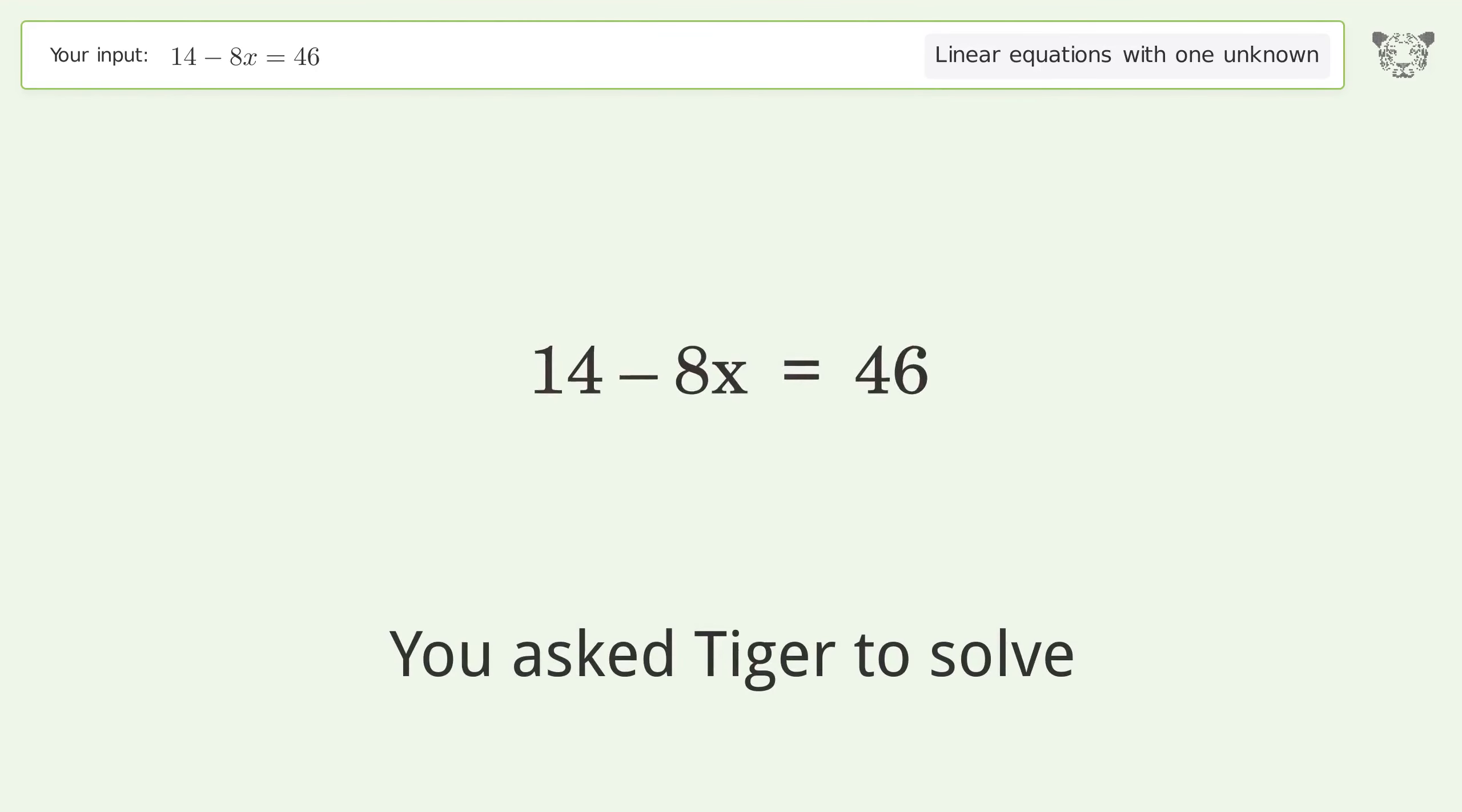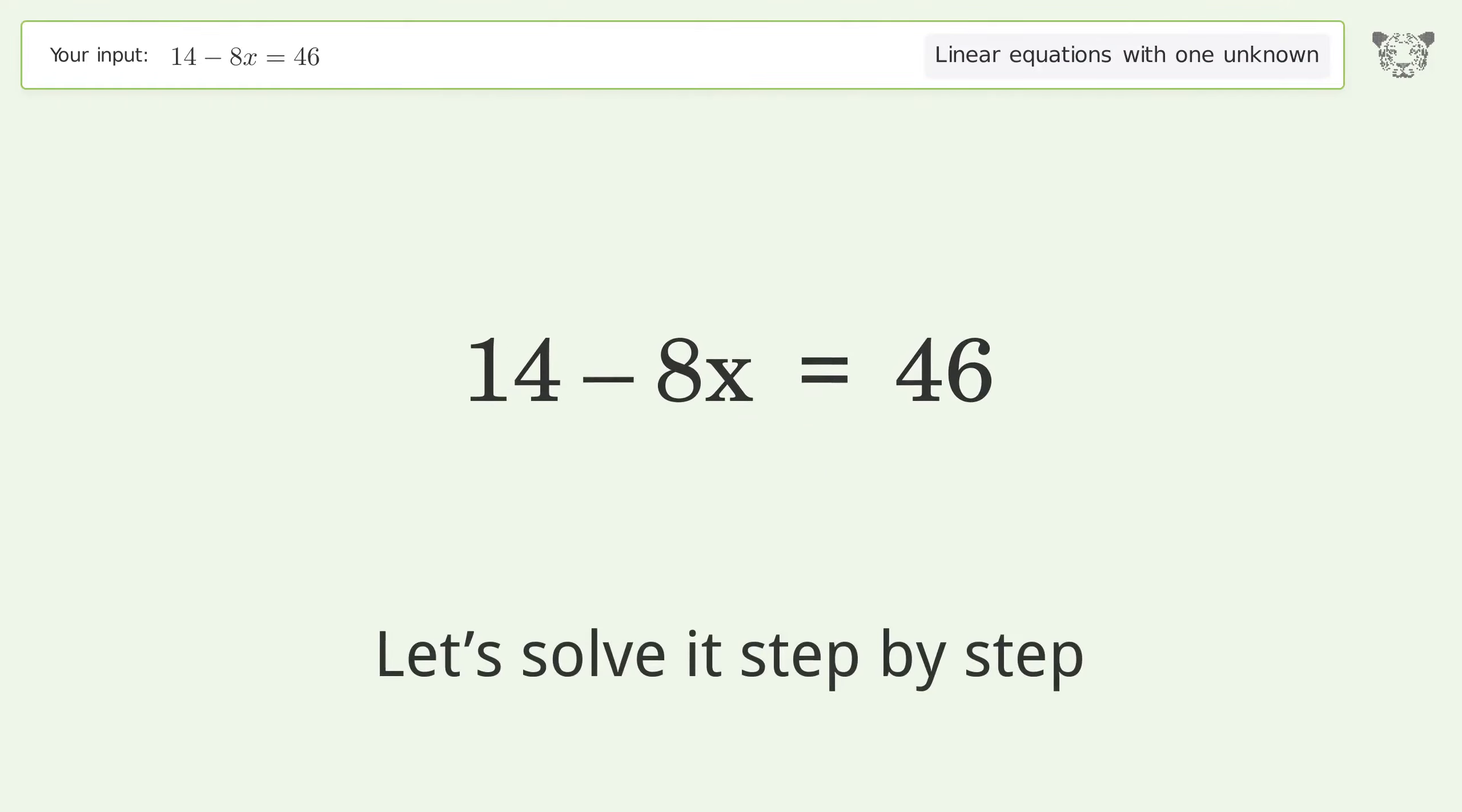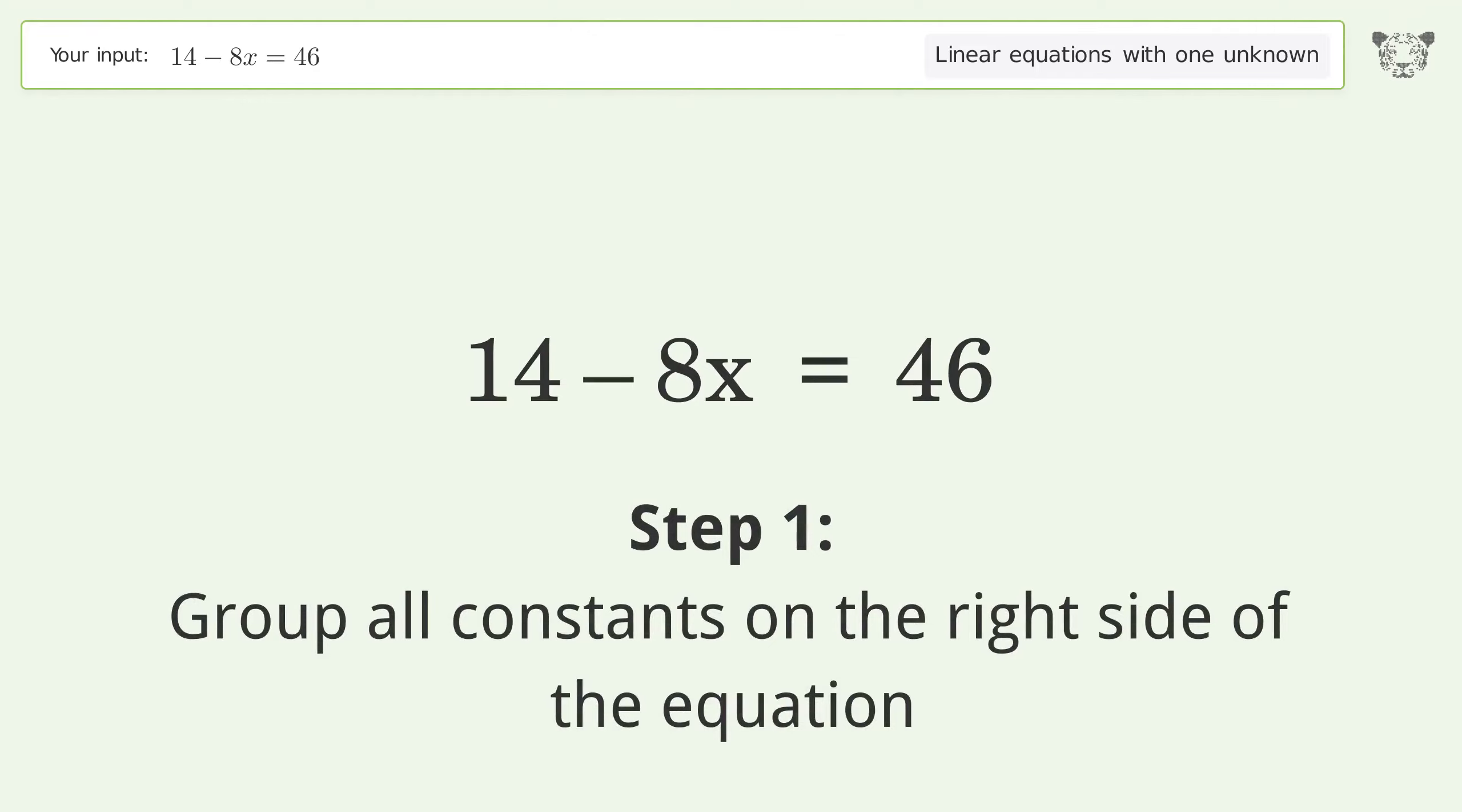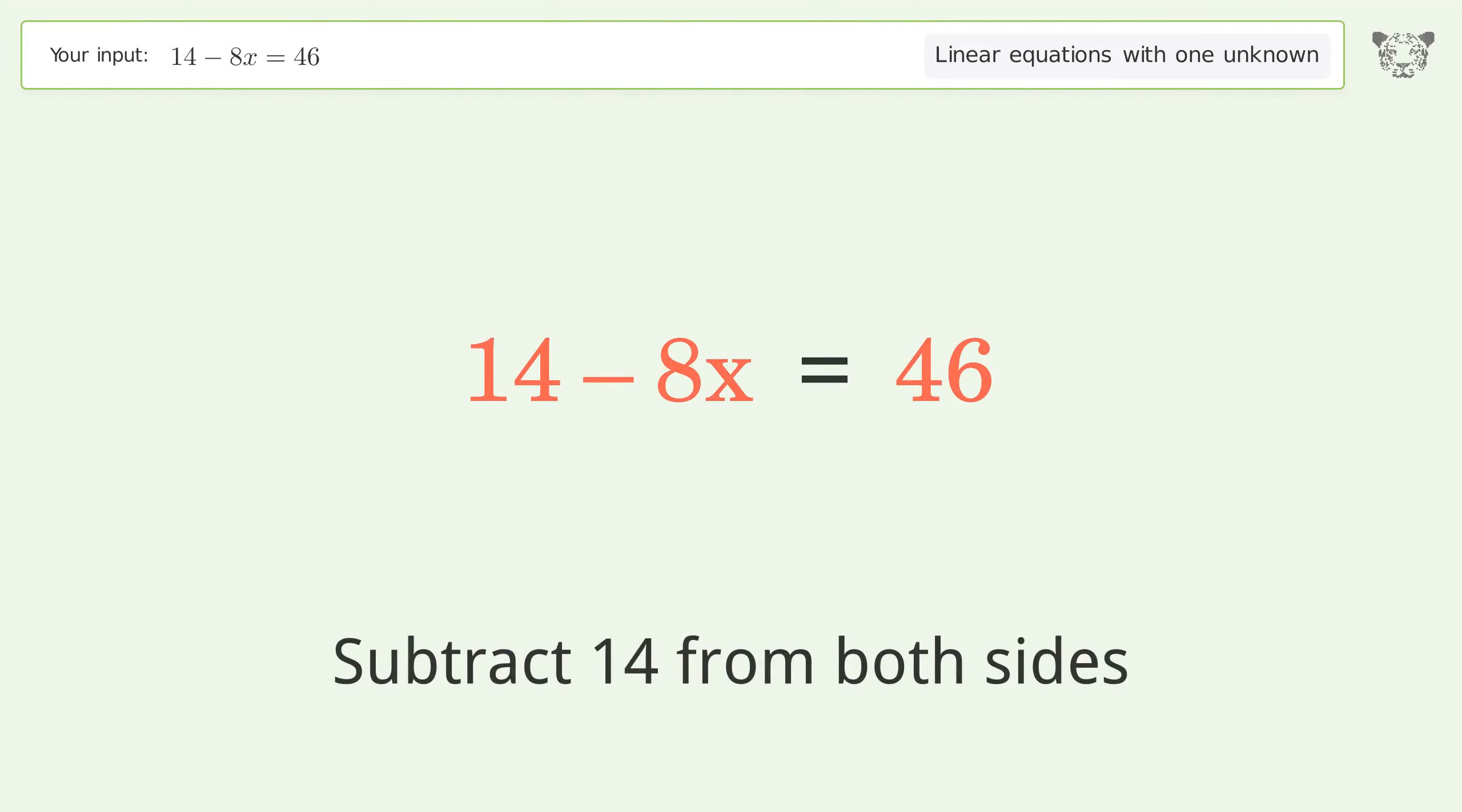You asked Tiger to solve this. This deals with linear equations with one unknown. The final result is x equals negative 4. Let's solve it step by step. Group all constants on the right side of the equation. Subtract 14 from both sides.